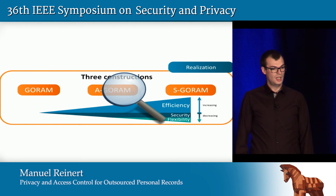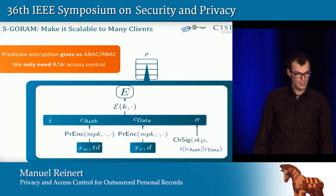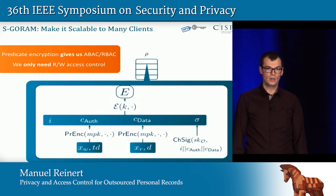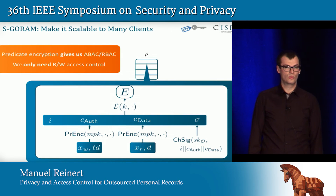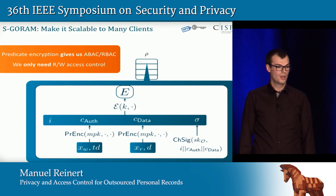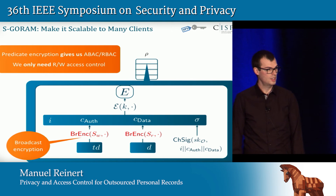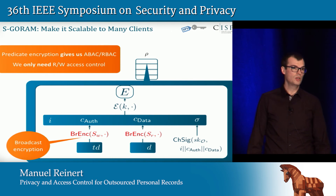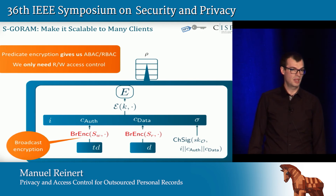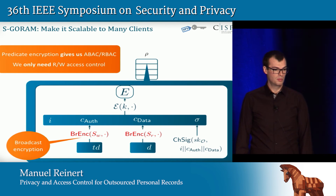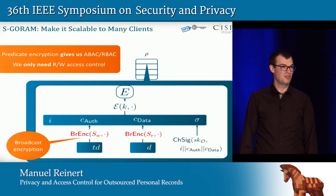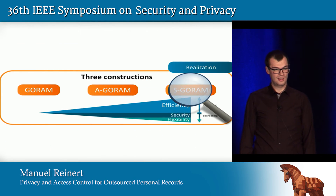For Scalable GoRAM, we noticed that predicate encryption actually gives us much stronger access control than we actually need — it provides role-based or attribute-based access control, while we only need read-write access control per entry. The cryptographic primitive designed exactly for this purpose is broadcast encryption, which we substitute for predicate encryption. We simply encrypt for the clients that may write and the clients that may read. Broadcast encryption is also used in some pay-TV providers, so it is naturally fast.